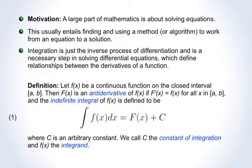Suppose that f of x is a continuous function on a closed interval a, b. We say that capital F of x is an antiderivative of f of x if the derivative of capital F of x is equal to f of x. The indefinite integral of f of x is then any antiderivative F of x plus an arbitrary constant c. We call c the constant of integration and f of x the integrand. The symbol for integration is an elongated s, and dx indicates that x is the variable of integration. Historically, the symbol dx is tied to the notion of infinitesimals, and the whole symbol for integration is tied to area.